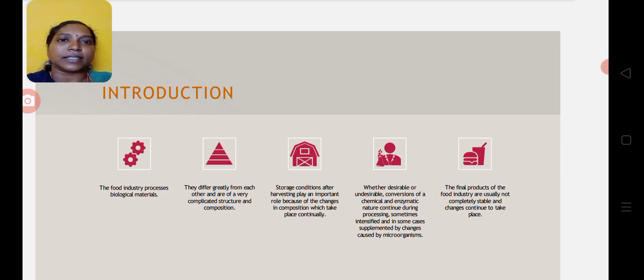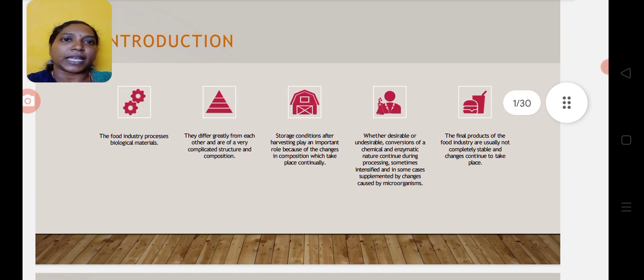Here is the answer. The food industry mainly depends upon biological materials, which greatly vary in composition and have complicated structures. Storage of these biological materials leads to changes in composition due to environmental conditions such as temperature and humidity. There will be continuous conversion of products due to chemicals and microorganisms.